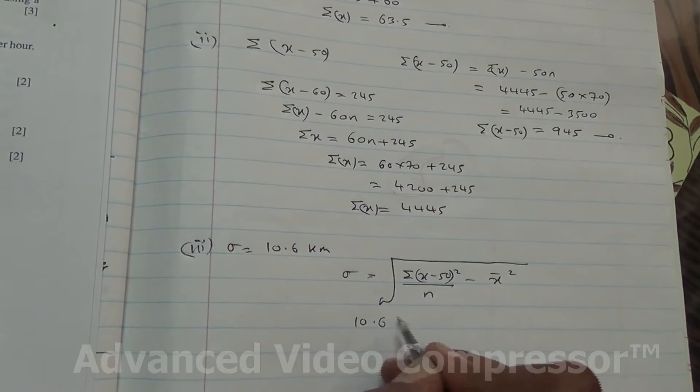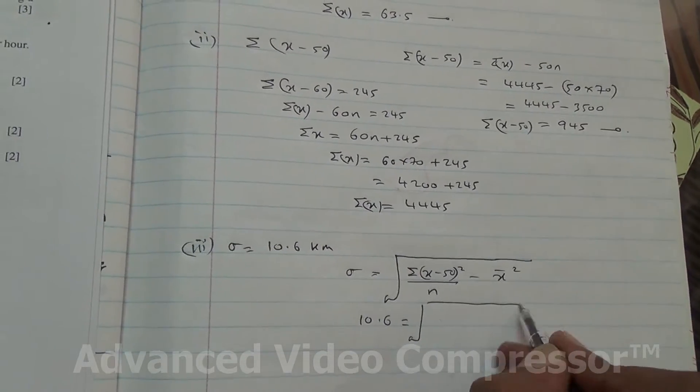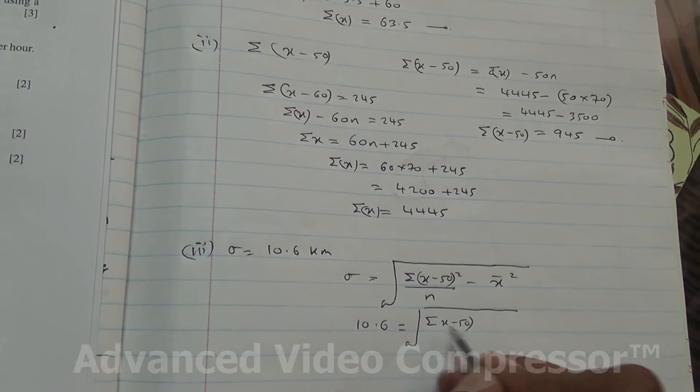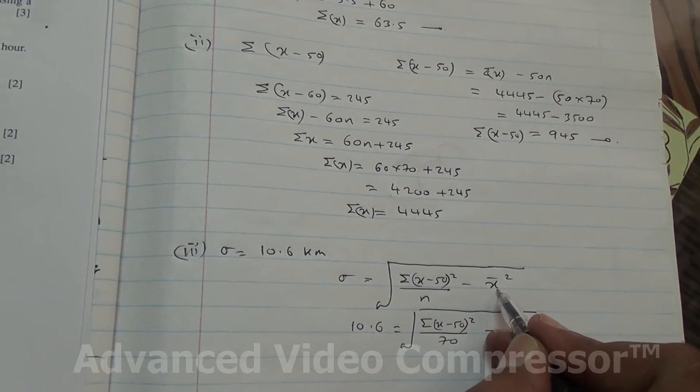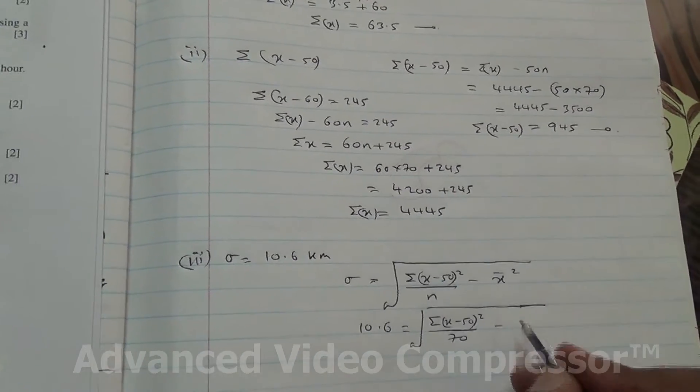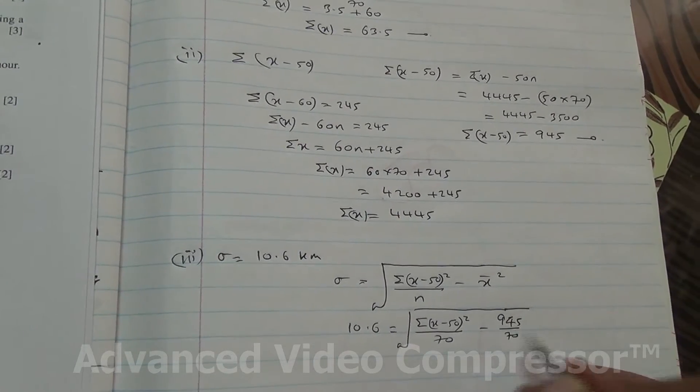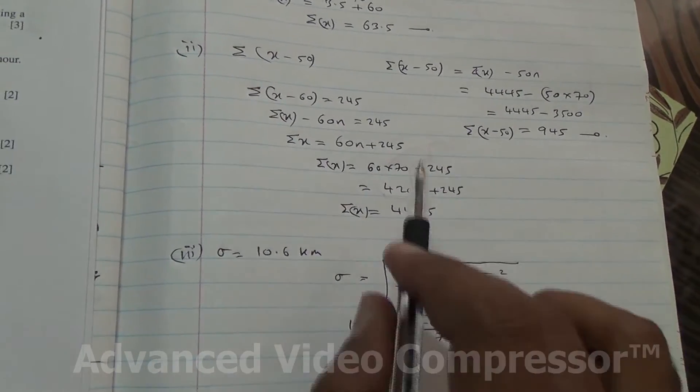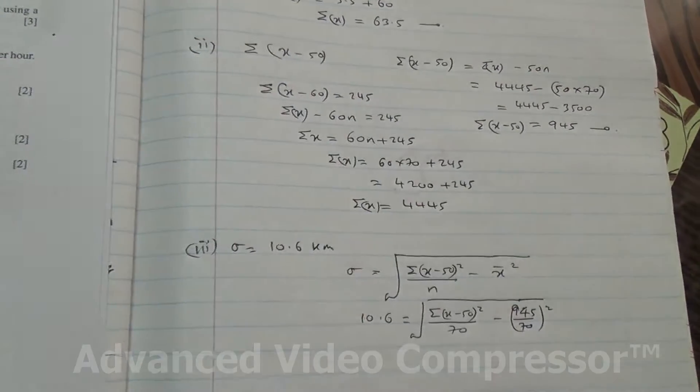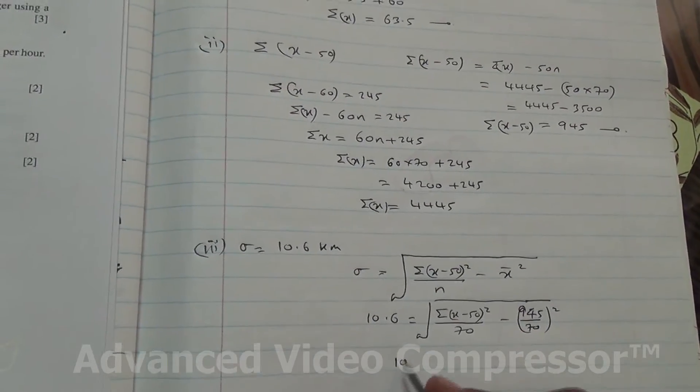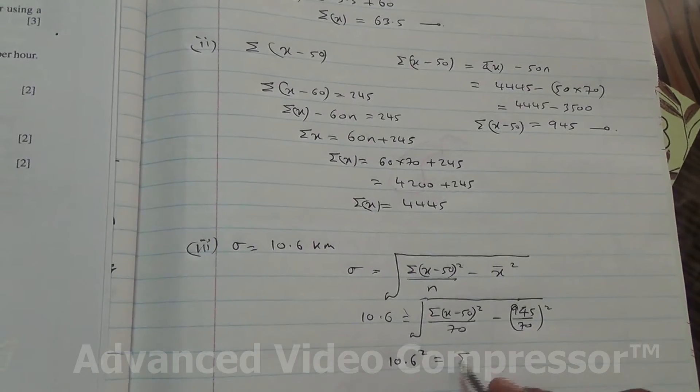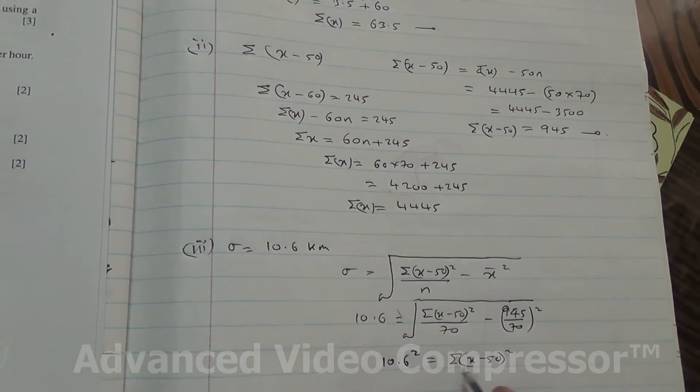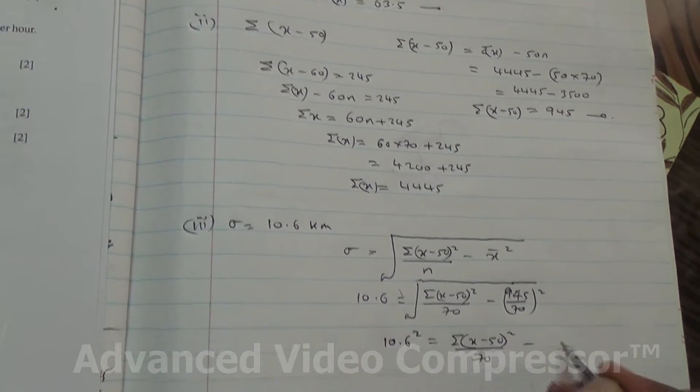Now, 10.6 is equal to the summation of x minus 50 squared, all of that divided by 70 minus the mean. Now, the mean's going to be Σ(x), which is 945, divided by 70 squared. That's the new mean for the values of x minus 50. So 10.6 squared, because you're taking out the square root sign, is going to be equal to summation of x minus 50 squared over 70.